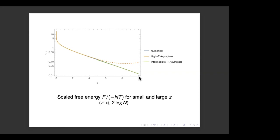Here are numerical results. The scaled free energy F/(−NT) — which equals g(x₀) — is plotted against z. There's a small-z asymptotic formula for high temperature and an intermediate-temperature asymptotic. The numerical result fits both extremes extremely well; in the middle the two formulae differ slightly and the numerical result smoothly joins them. The validity criterion is z much less than 2 log N — for N = 10²⁰ that's z much less than about 50.